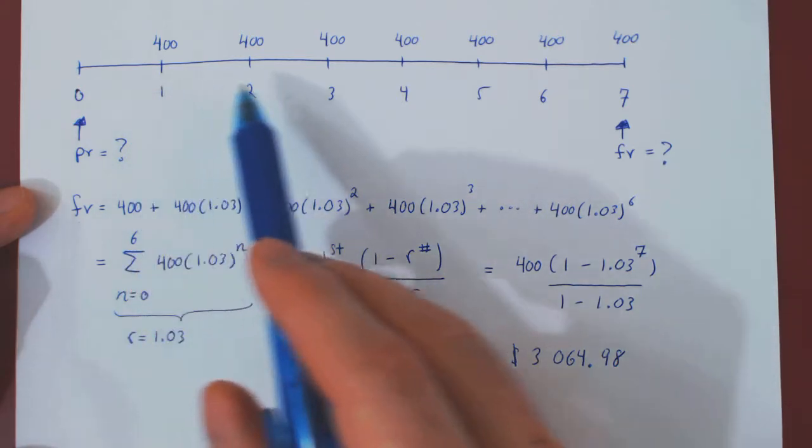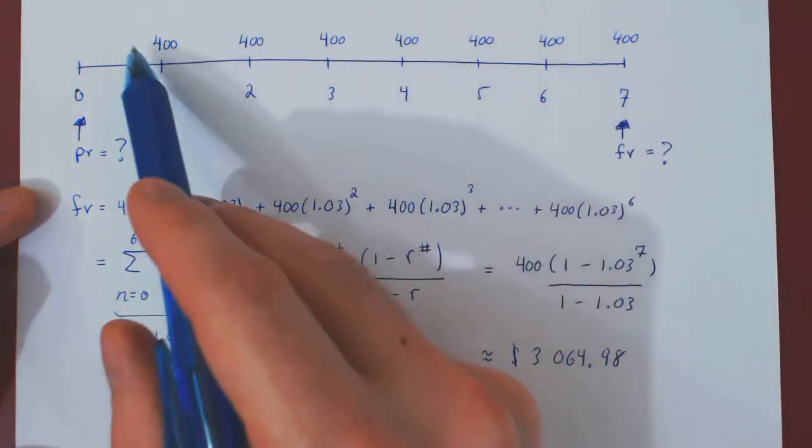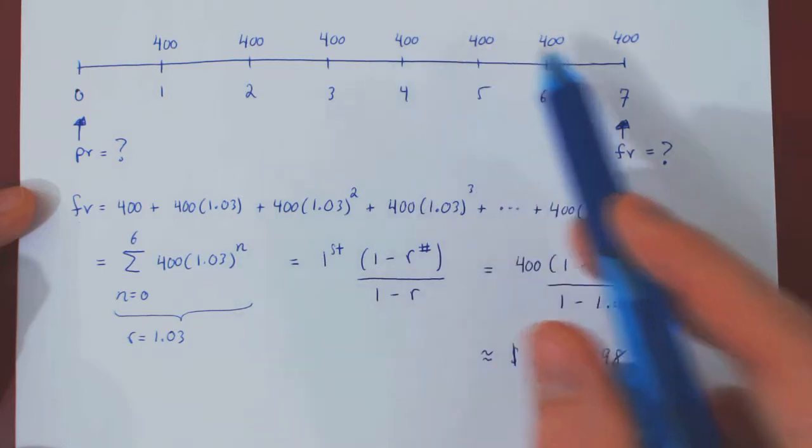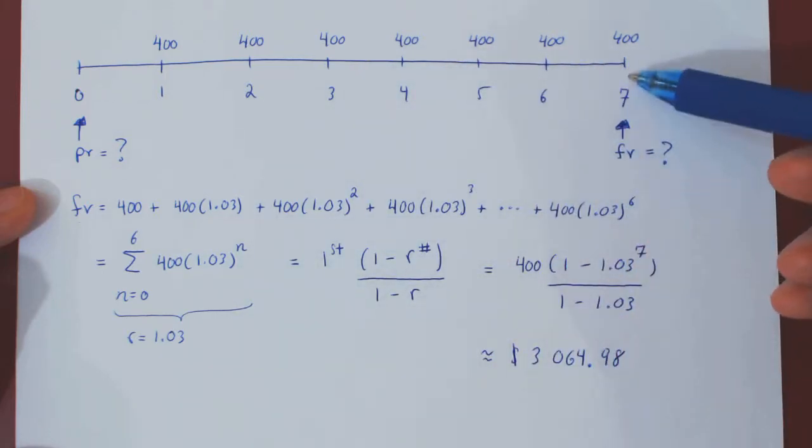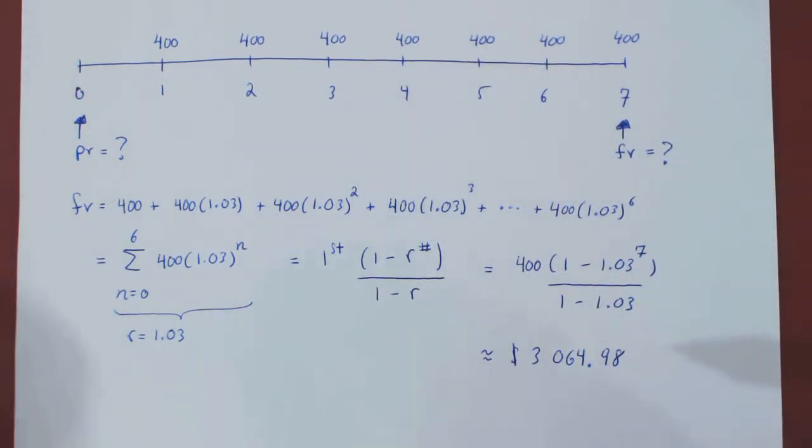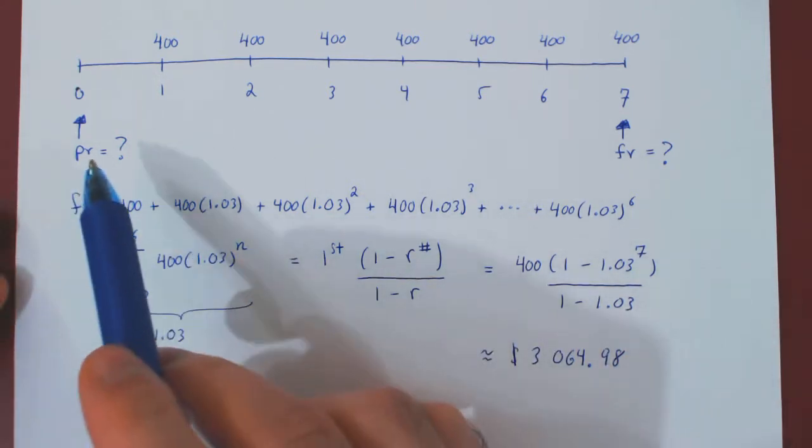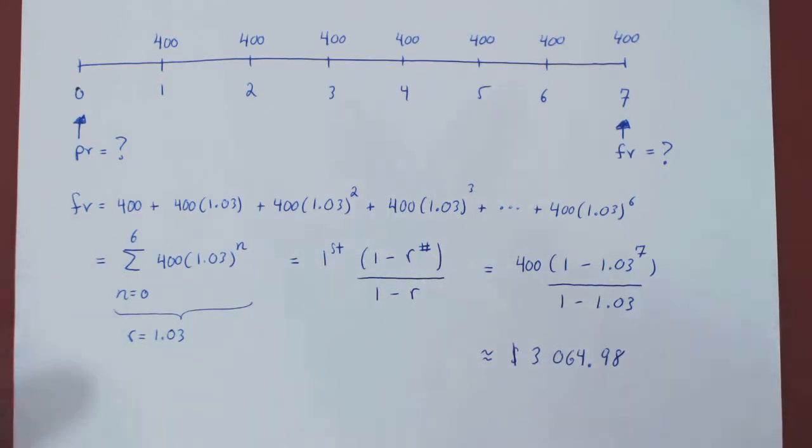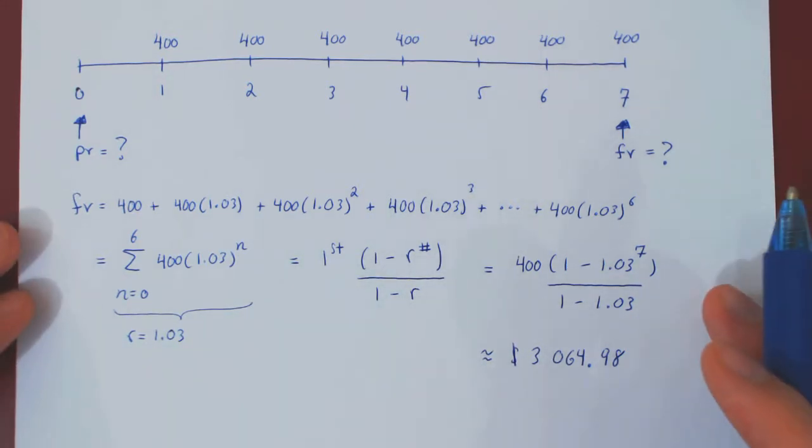So, we now have the final value of those seven investments at the end of each year, after seven years, if we can invest at an annual interest rate of 3%. Now, for the present value, PV, there are two ways to think about it.